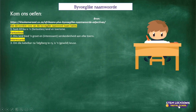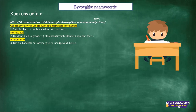Now you're going to do this yourself. 'Om die kabelkar na Tafelberg te ry, is a gewild keuse.' Ends on two consonants — what's it going to get? Guys, please try and type something. What is that word going to change into? Remember: if a word ends on two consonants, it gets an e. So 'gewild' becomes 'gewilde'.